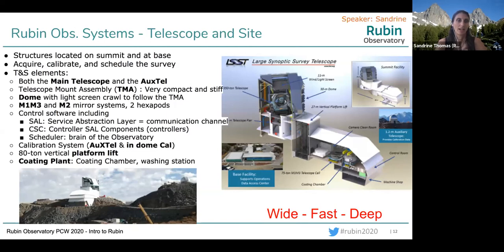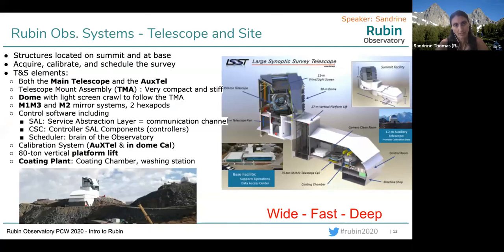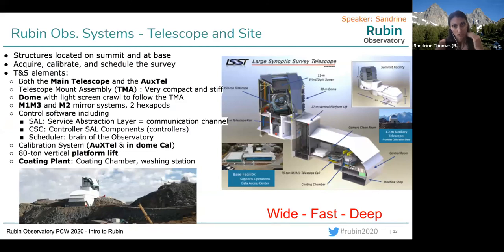Our goal is to acquire, calibrate, and schedule the survey. The main telescope has a very stiff telescope mount assembly — very compact — that allows for very fast motion. We have a 30-second exposure, but we need to get to every position in the sky in about five seconds. That means the telescope needs to arrive at the position in three seconds and get ready to observe. We also have a dome that follows the TMA to ensure it's at the right location when we need to reach the right field.